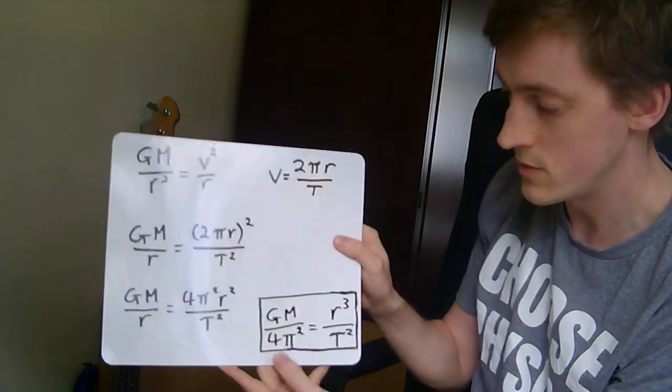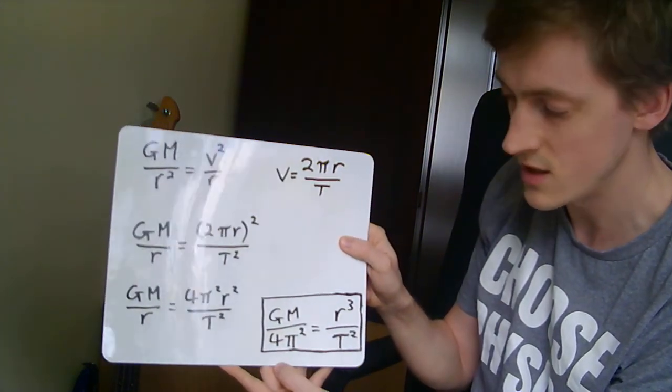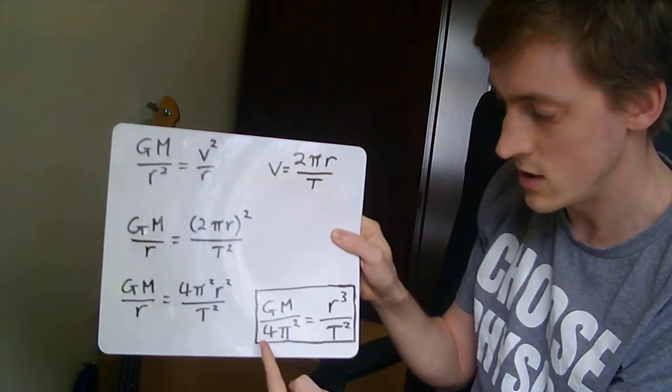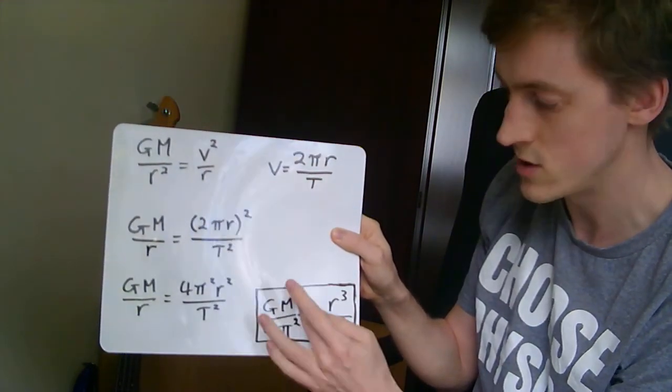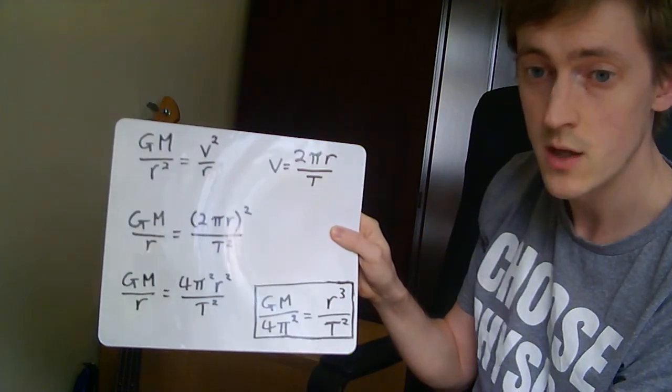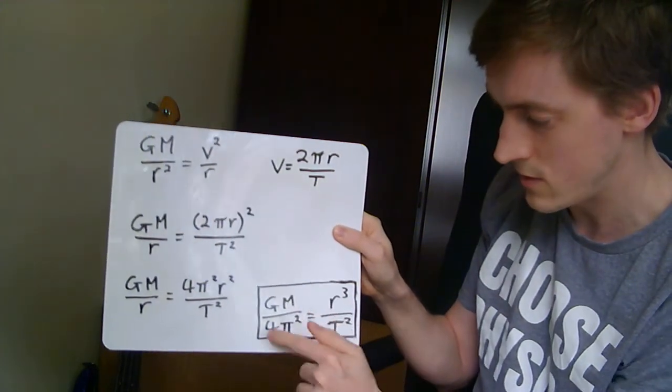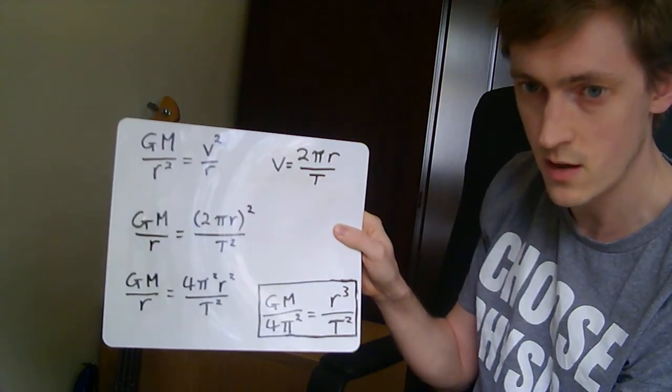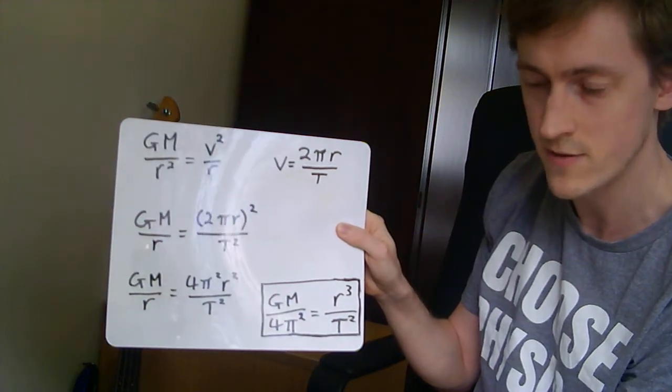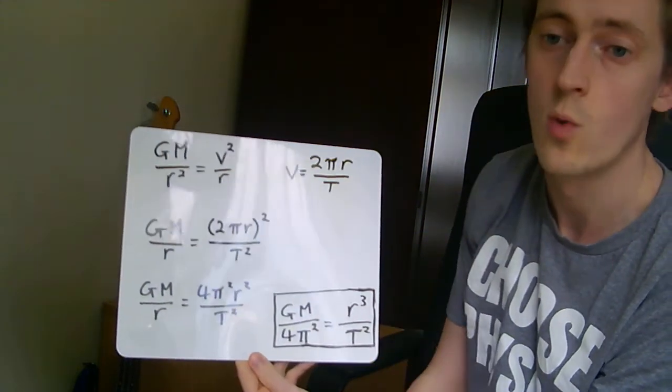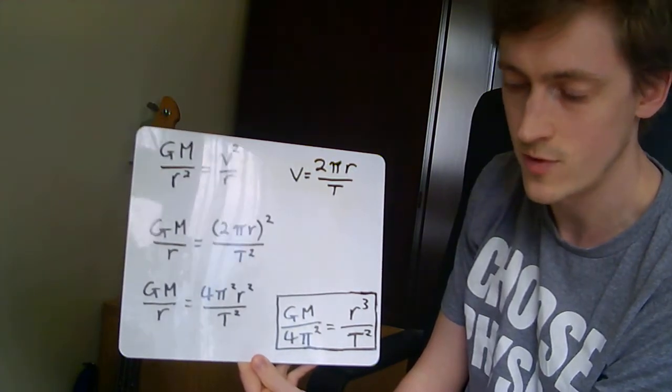You can put the numbers in if you want. The mass of the sun is 2 times 10 to the 30 kilograms. You know what G and 4 and π and the little squared thing are. It will just give you a number. So all objects going around the sun will have a certain number that their r³ over T² will have to be. And that shows why Kepler's law has to be correct.